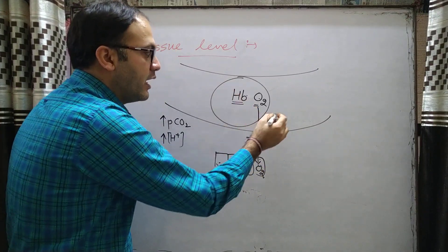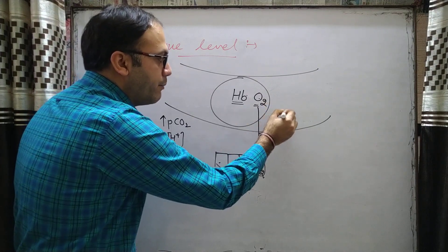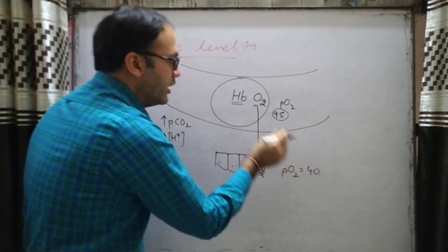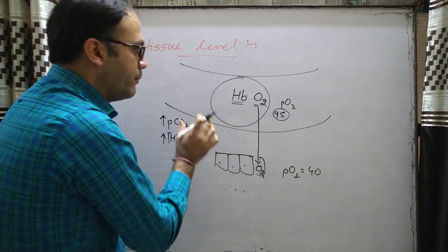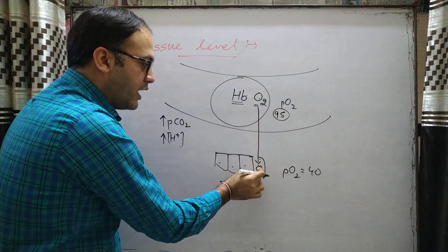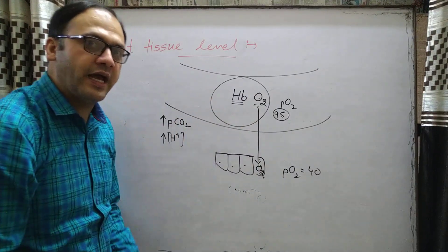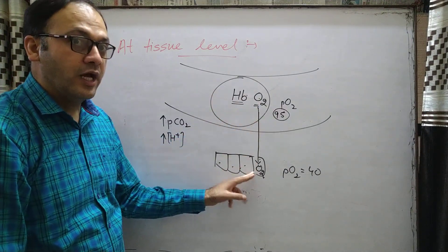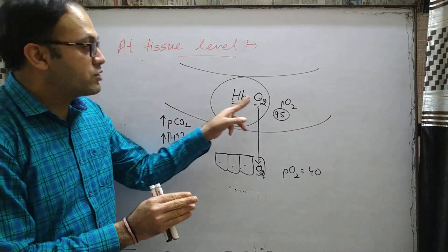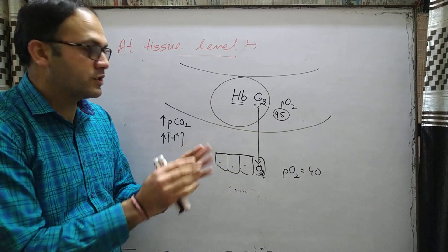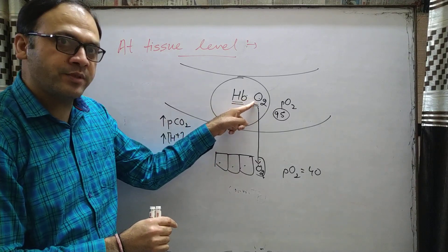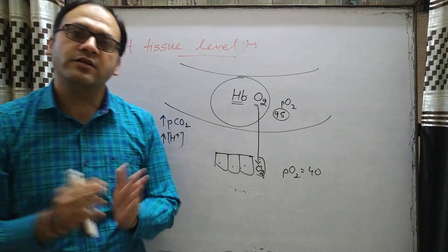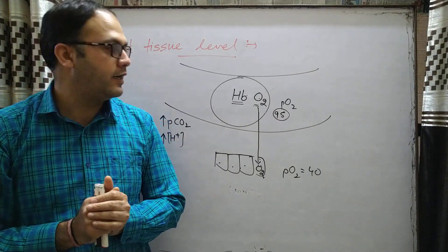In the blood arriving at tissues, the partial pressure of O2 (PO2) is 95 mmHg, and at the tissues PO2 is 40 mmHg. Because of the Bohr effect, hemoglobin releases its oxygen, which then diffuses from the capillary into the tissues. If hemoglobin did not release the oxygen, the tissues would not receive it. So the Bohr effect helps hemoglobin dissociate from oxygen, allowing it to move into the tissues where it is used.